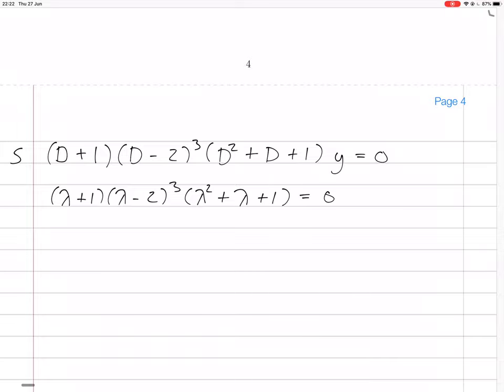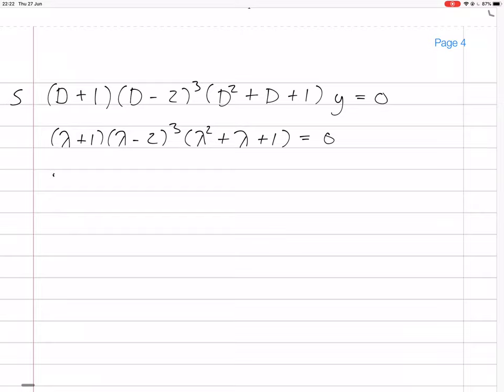Now, saying that equals 0 tells you that the roots are lambda equals minus 1, then 2, 2, and 2, so 2 three times, and then lambda equals minus 1 half plus minus square root of 3 over 2, i.